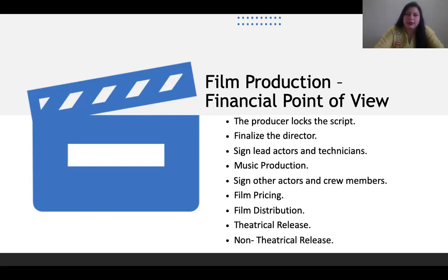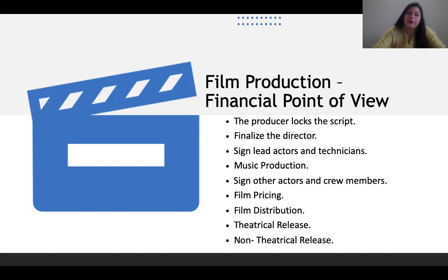The second amount is released when the director is finalized and contracted — when the director confirms readiness to make the film. The third phase is when they sign the lead actors, senior technicians, cinematographer, DOP, sound designer, and other above-the-line talent. When this set of key people are contracted, funds are released at that point as well.